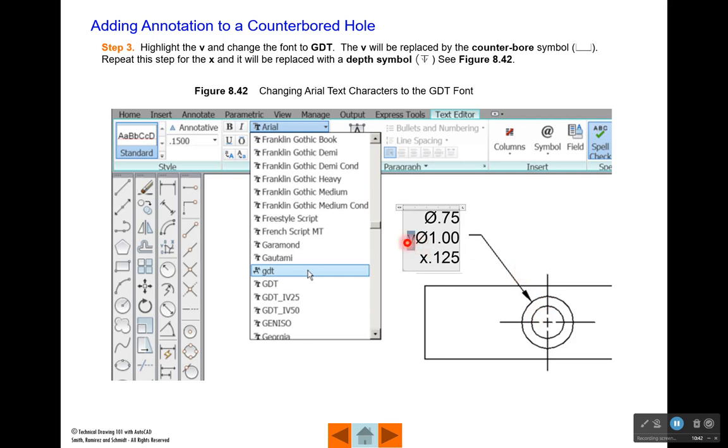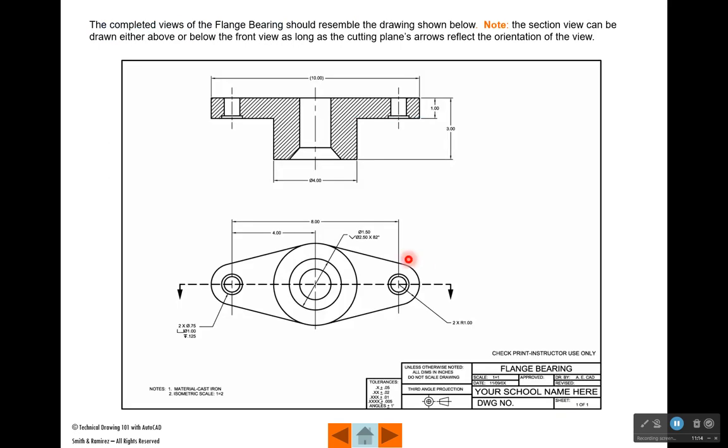Then what you're going to do is highlight the lowercase v and go to your text editor. Pick on the down arrow and change the lowercase v from Arial to GDT. When you do that, this is going to change to the counterbore symbol. Then you're going to highlight the x and change it to GDT, and the x will change to the depth symbol. I want to remind you something - these have to be lowercase or this is not going to work. This is what we want that to look like when it's done.